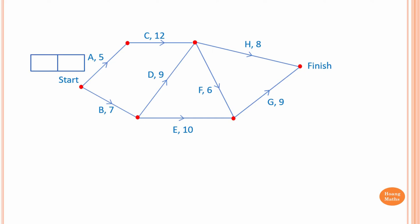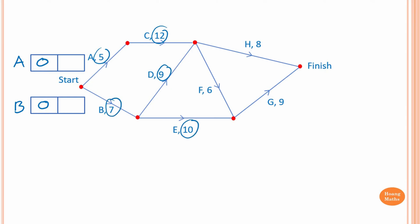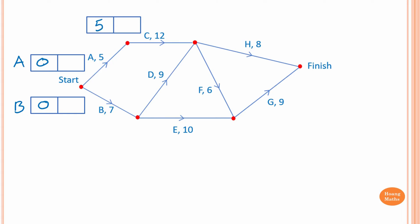Let's draw a box for activity A — this box here is for activity A. We start at 0, and this box is for activity B, which also starts at 0. To do activity C, we need to complete activity A first. In this example, the weighting for each activity is in hours. So the earliest time you can start on activity C is 0 plus 5, which is 5 hours.